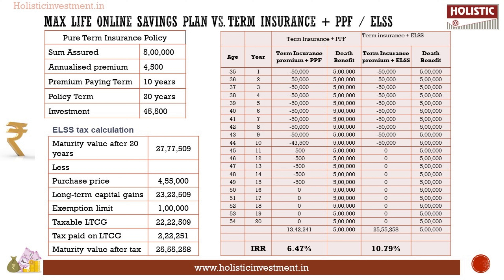We have chosen both debt and equity instruments. For the debt instrument, PPF has a lock-in of 15 years and can be extended for a period of 5-year batches. Since the premium paying term is 10 years, in years 11 to 15 a minimum contribution of Rs. 500 per year is made, with adjustments in the calculation. The final maturity is available at the end of 20 years. Under pure-term plus PPF investment, the final maturity value is Rs. 13.42 lakhs and the IRR is 6.47%. This may seem similar to the benefit illustration 8% scenario, but bear in mind that PPF is a debt instrument, whereas MaxLife Online Savings Plan is a market-linked product.